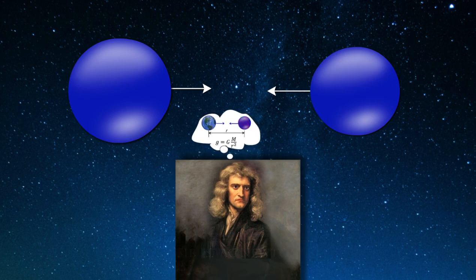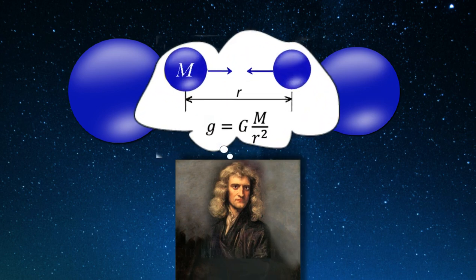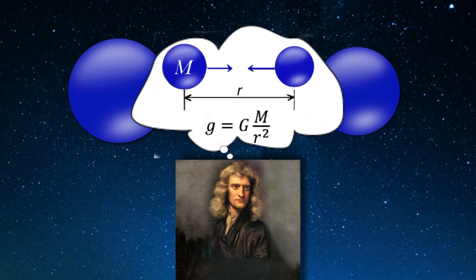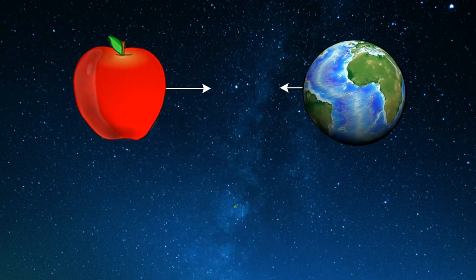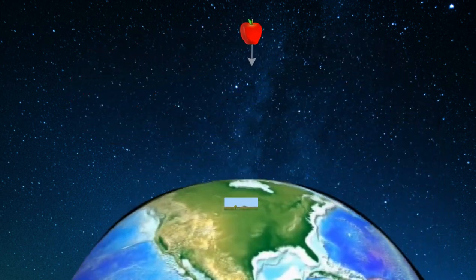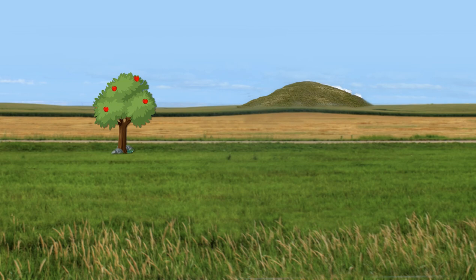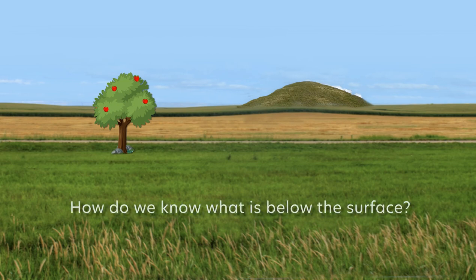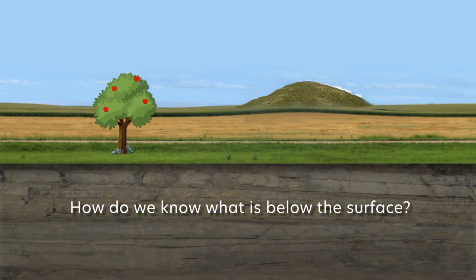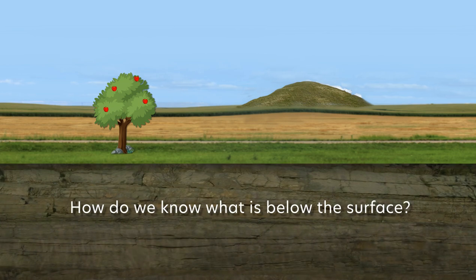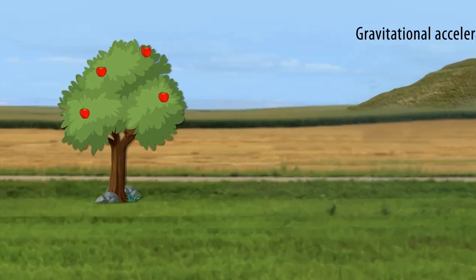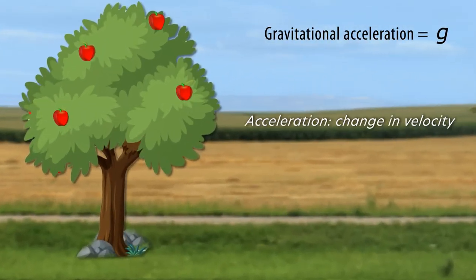Newton's law says that there is a gravitational attraction between any objects that have mass. But gravity isn't the same everywhere. In fact, it varies ever so slightly across the globe due to both geologic features below the surface and elevation. One way to find subsurface features or objects is to measure the gravitational attraction that the Earth exerts at locations near buried features. But first, let's define gravity.